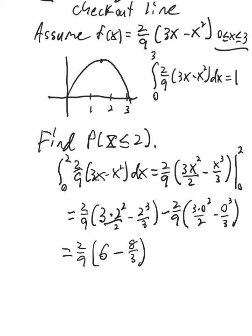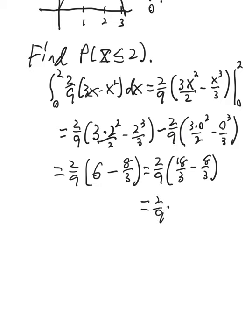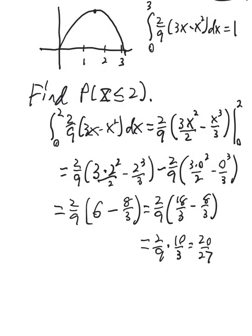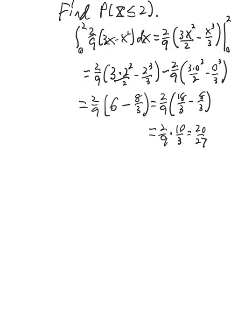And however you want to do the arithmetic, I guess we can change everything to thirds here. 2 ninths. So this will be 18 thirds minus 8 thirds. So we're going to have 2 ninths times 10 thirds. So that'll be 20 over 27. And so that represents the probability x is less than or equal to 2. And that's also going to be the area under this curve from 0 to 2. And that seems reasonable. That's definitely going to be well over a half. All right. So that's an example of using a probability density function.